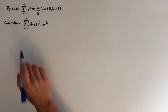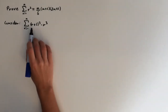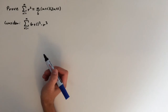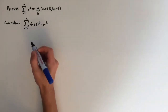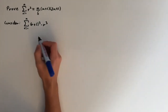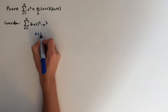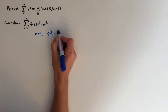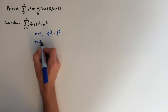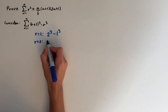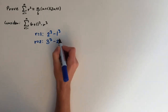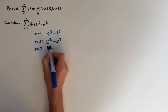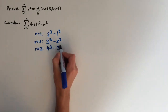The way we do this is we consider this series right here: r plus 1 cubed minus r cubed. We're going to use the method of differences and look at a few terms to find the pattern. When r equals 1, this is going to be 2 cubed minus 1 cubed. When r equals 2, this will be 3 cubed minus 2 cubed. When r equals 3, this will be 4 cubed minus 3 cubed.